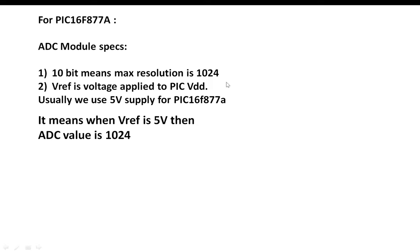The ADC range is 0 to 1023, giving a total of 1024 steps. At 1024, the maximum voltage is 5 volts. So at 512, it will be 2.5 volts. The voltage applied to the pin corresponds to an ADC value — for example, if 1 volt is applied, the ADC value changes accordingly. You calculate this value theoretically using a formula.